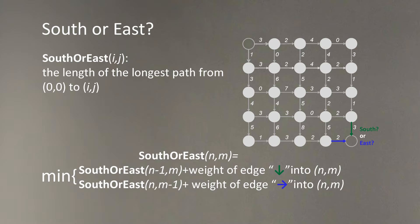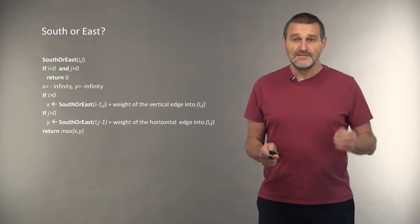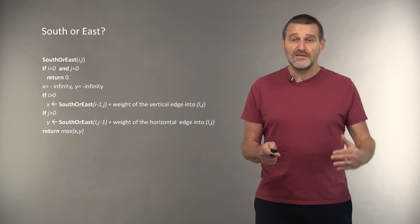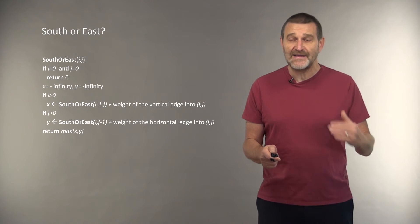And of course, we can immediately write a simple recursive program for computing SouthOrEast for (n,m), the final destination vertex. It is simply minimum of SouthOrEast(n-1,m) plus weight of the vertical edge into the final node, or SouthOrEast(n,m-1) plus weight of the horizontal edge into the final node. And as soon as we realized it, there is a very simple recursive algorithm for computing the optimal path to node (i,j).